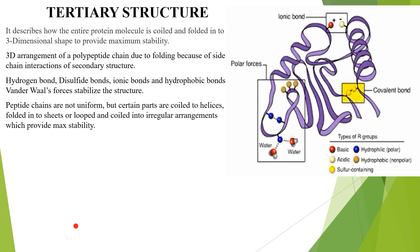The tertiary structure forms when the secondary structure folds further and coils again. It is a three-dimensional structure where, due to extra folding, the side chains and groups come closer to each other, increasing the number of bonds. In secondary structure there was only hydrogen bonding; in tertiary structure there are additional bonds — hydrogen bonds, disulfide bonds, ionic bonds, hydrophobic interactions, and van der Waals forces of attraction — all of which stabilize the structure.